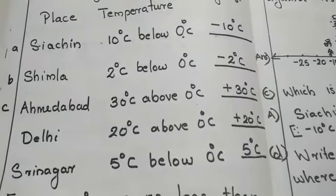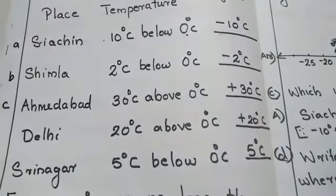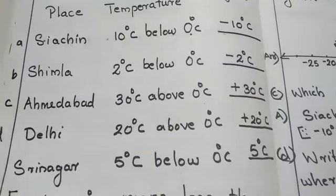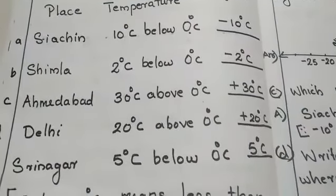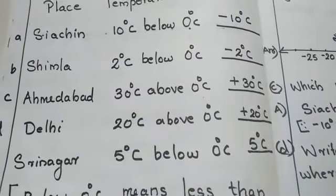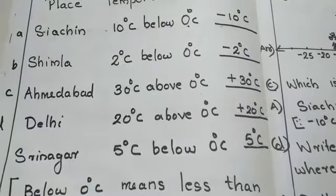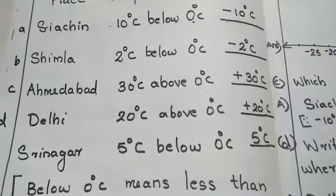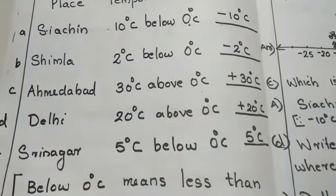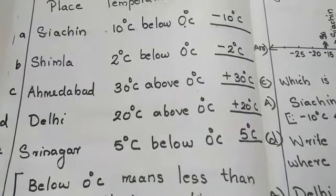Ahmedabad 30 degree Celsius above 0 degree Celsius. Above. What will come above 0? Positive number. 30 degree Celsius. Next Delhi 20 degree Celsius above 0. So, it is also positive 20 degree Celsius. Then, what will be the next answer?